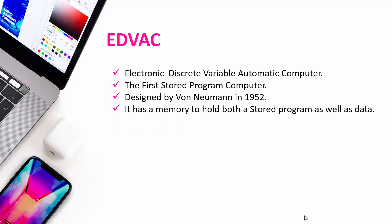Next is EDVAC — Electronic Discrete Variable Automatic Computer. It is the first stored program computer, meaning it was the first computer that could store programs. A program is a set of instructions, and instructions are collections of data. EDVAC was designed by Von Neumann in 1952. It has memory to hold both the stored program as well as data.